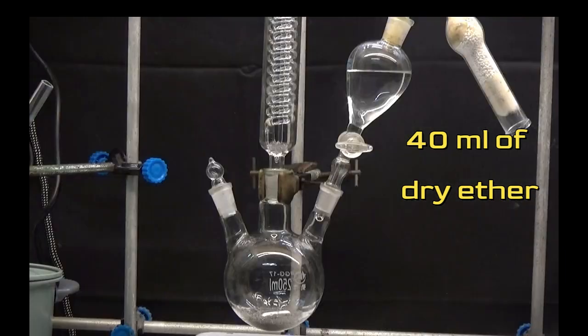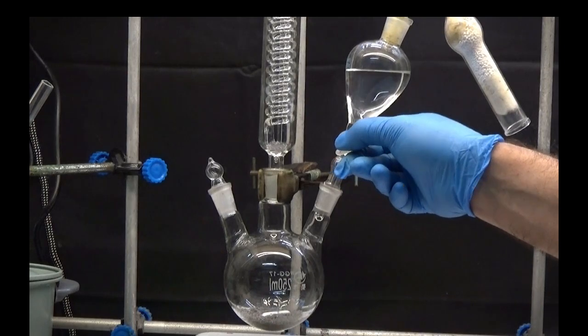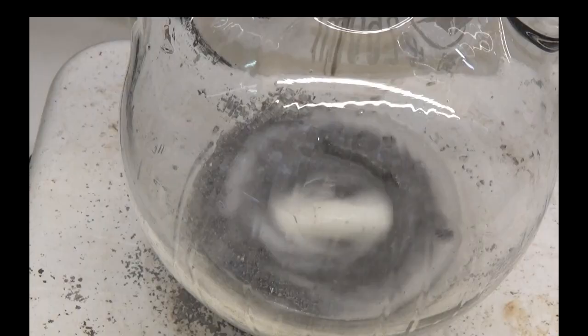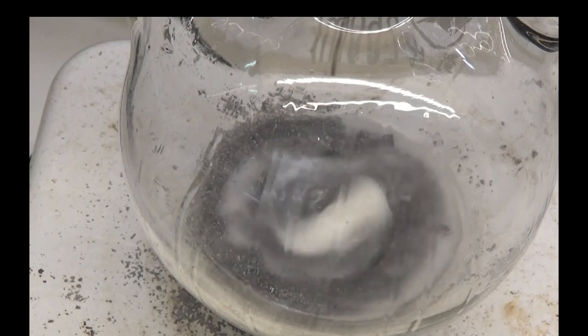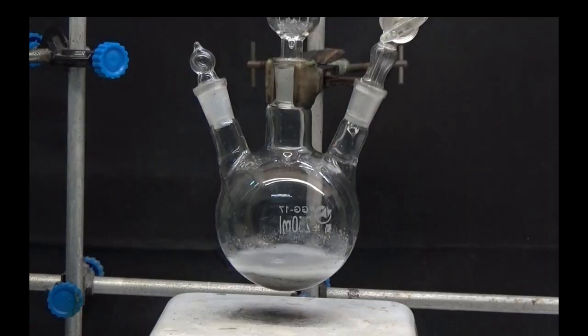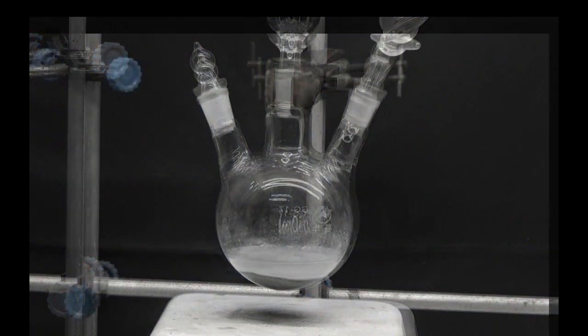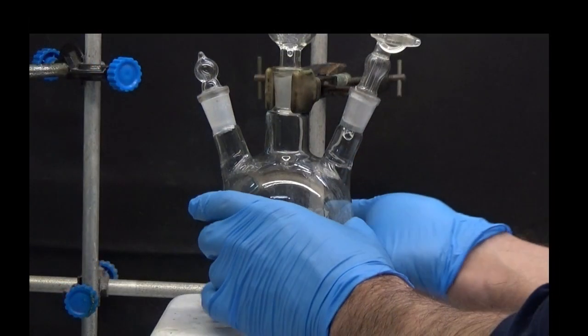slowly add 40 milliliters of dry ether, stirring constantly. If the boiling stops, warm the flask with your hand until the reaction begins.